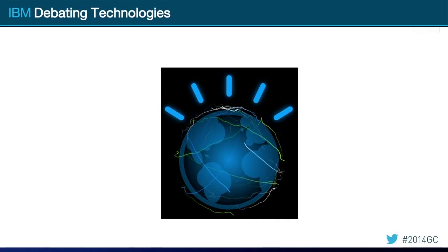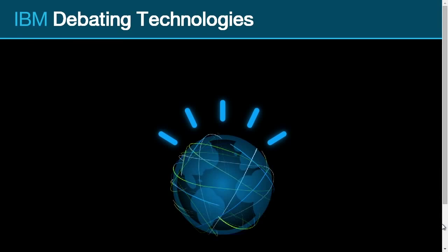Now I'd like to show you a third capability which we've never shown before outside of our research labs. This will give you a hint and a sense for where Watson is going in the future. The real question is, can a computer not just answer complex questions with simple answers, and not just take massive amounts of genomic data and come up with better treatments for cancer, but can a computer take raw information and digest and reason on that information and understand the context?